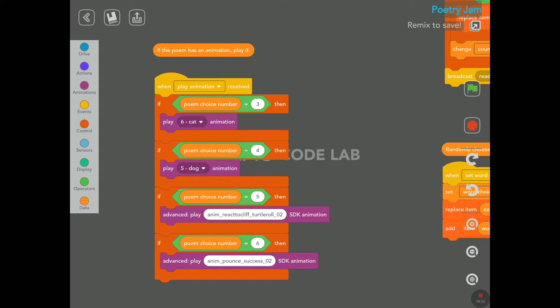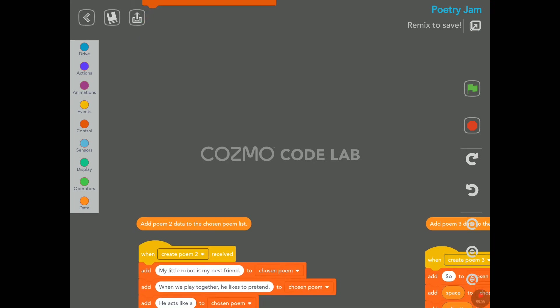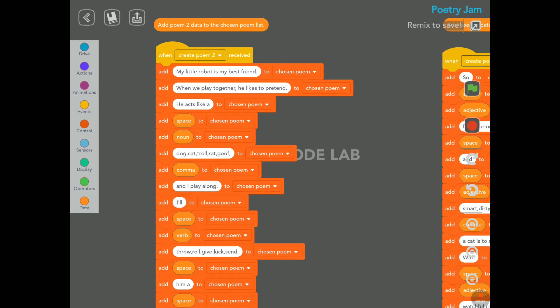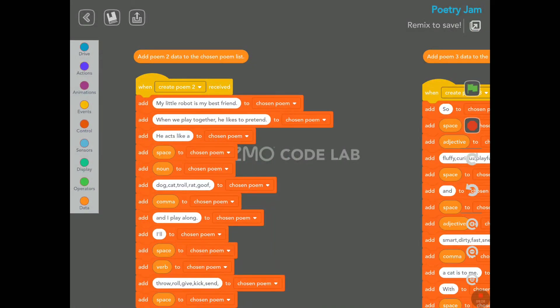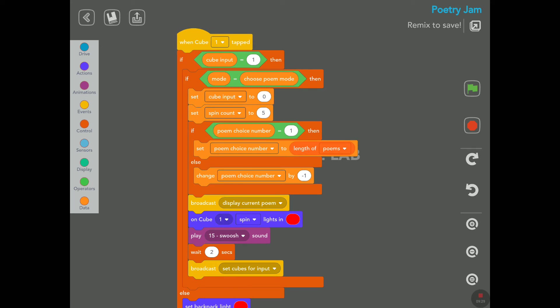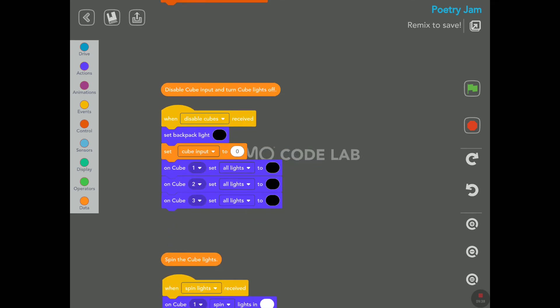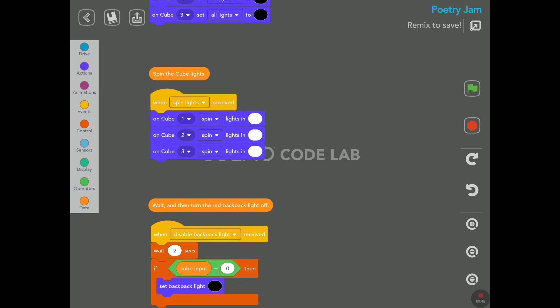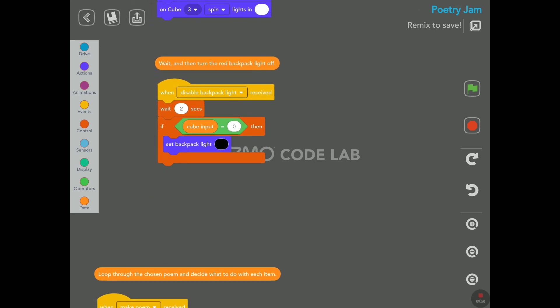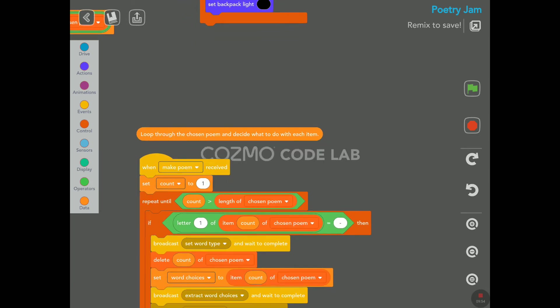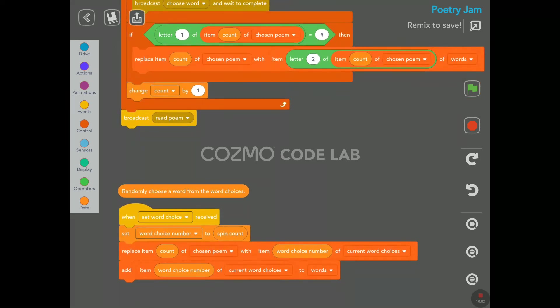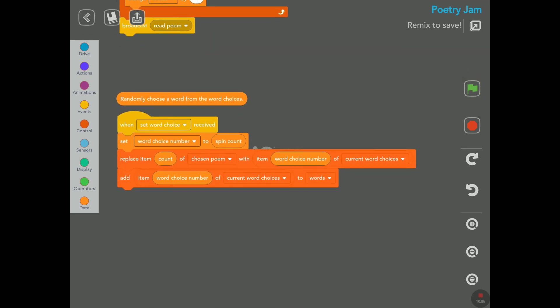If the poem has an animation, play it. So some poems have animations here, like three, four, five, and six have animations. And here again, similar loop here. Add poem two data to the chosen poem list. So poem two data, we saw poem one recently. So here first loop with the cube interaction. When cube one is tapped, this is what happens here. Disable cube input and turn the cube lights off, again by setting the lights to black. Here we have when the cubes are spinning white. Wait and wait and then turn the red backpack light off. Look for the chosen poem and decide what to do with each item. There's a lot of, this is big coding here.